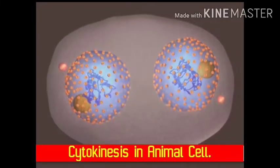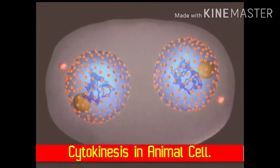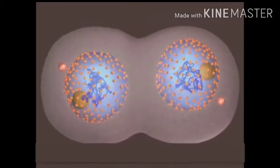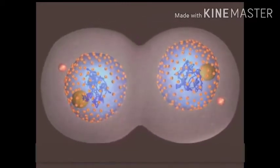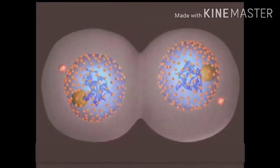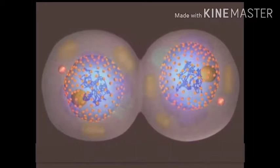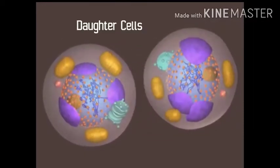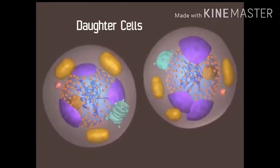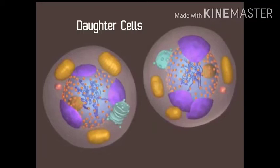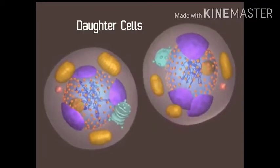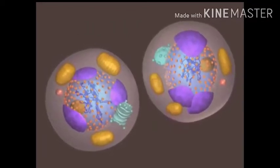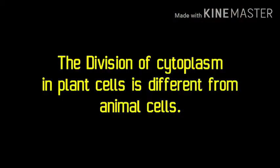This is due to the presence of a cell wall in the plant cell. In animal cells, a furrow is formed in the plasma membrane at the center of the cell. The furrow extends and joins at the center of the cell, dividing the cytoplasm into two, and two daughter cells are formed.